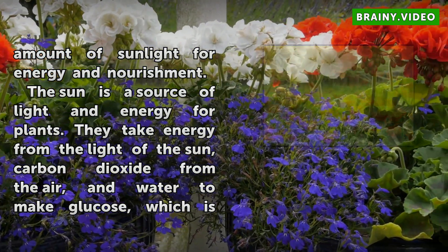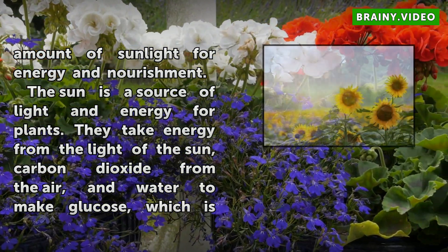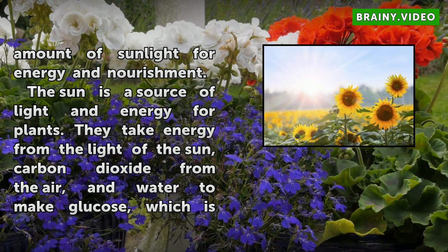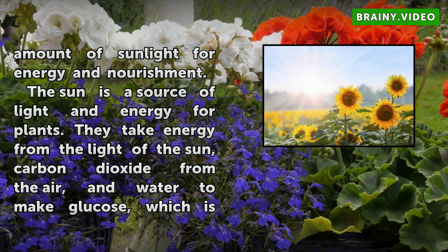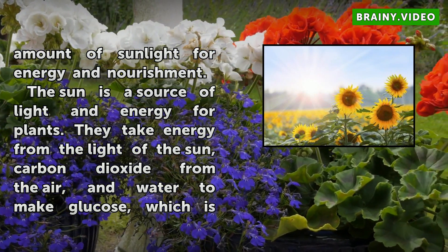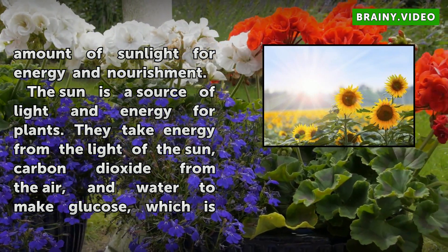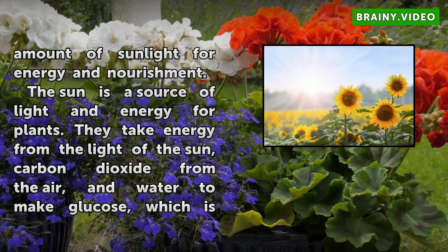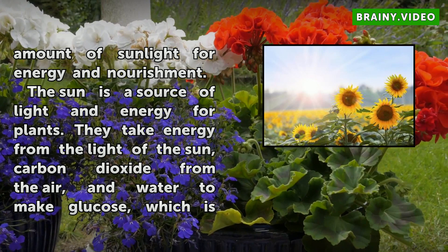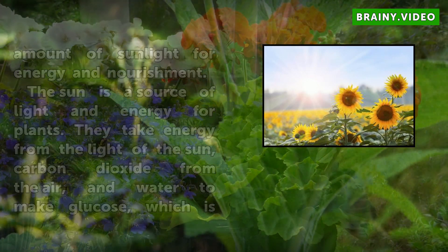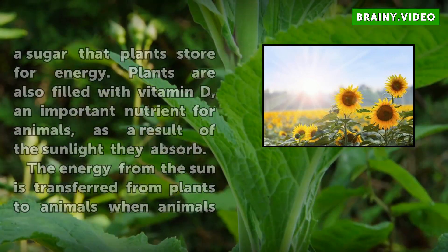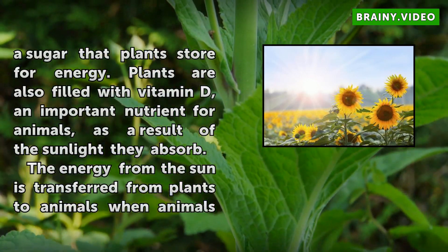The sun is a source of light and energy for plants. They take energy from the light of the sun, carbon dioxide from the air, and water to make glucose, which is a sugar that plants store for energy.